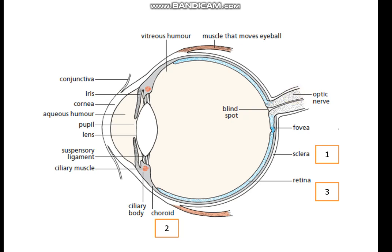The visual center of the brain interprets the image. Then we have two structures which control light intensity: one is the colored part, the iris, and the other is the transparent part, the pupil. Then we learned about ciliary muscles, the lens, and suspensory ligaments — these three structures together control the light focusing on the retina.